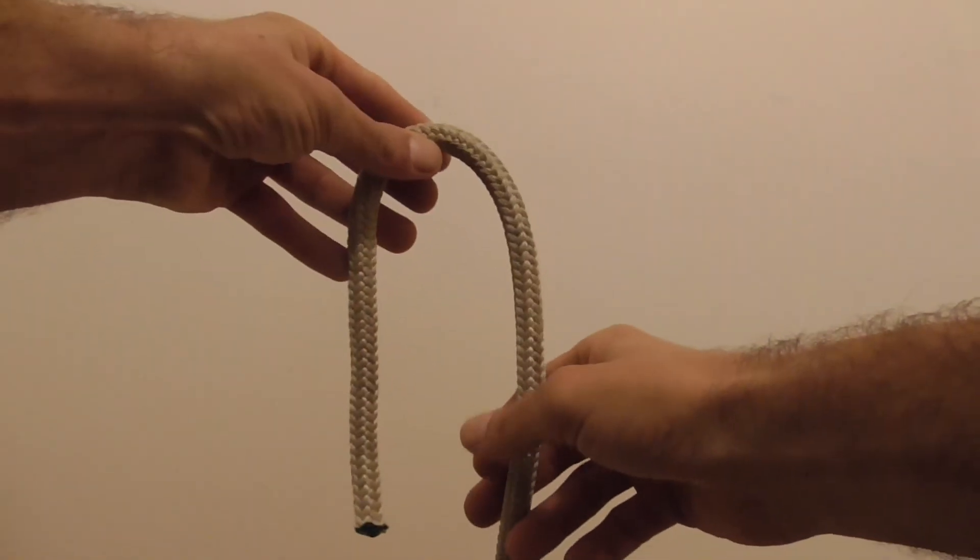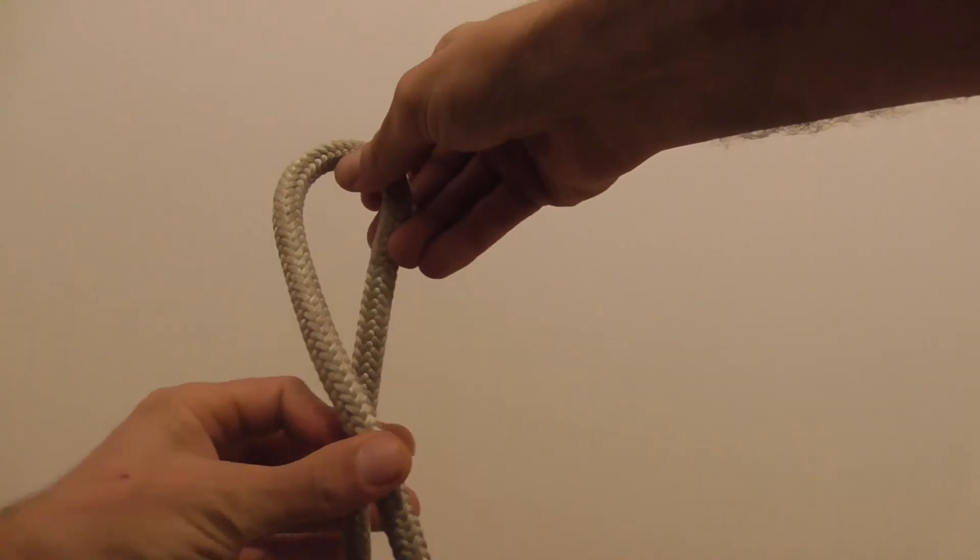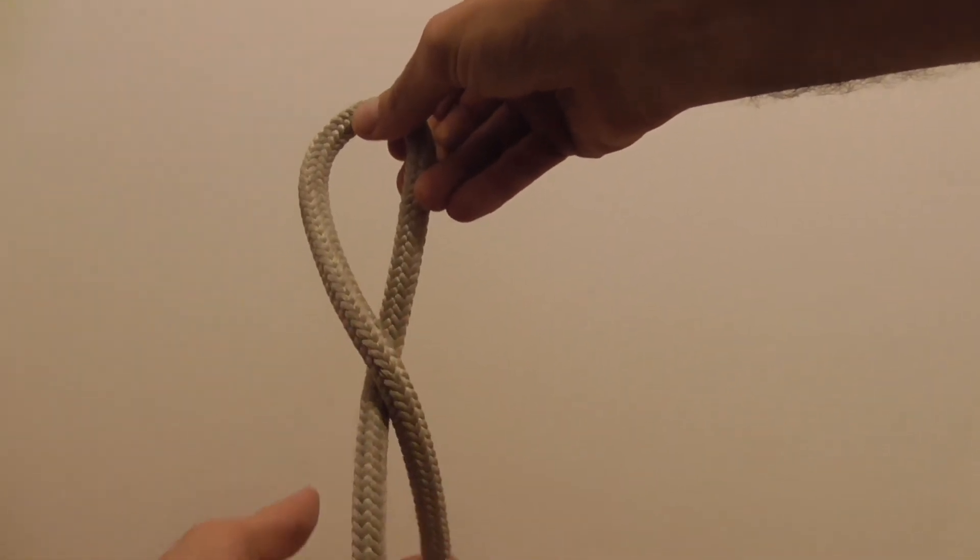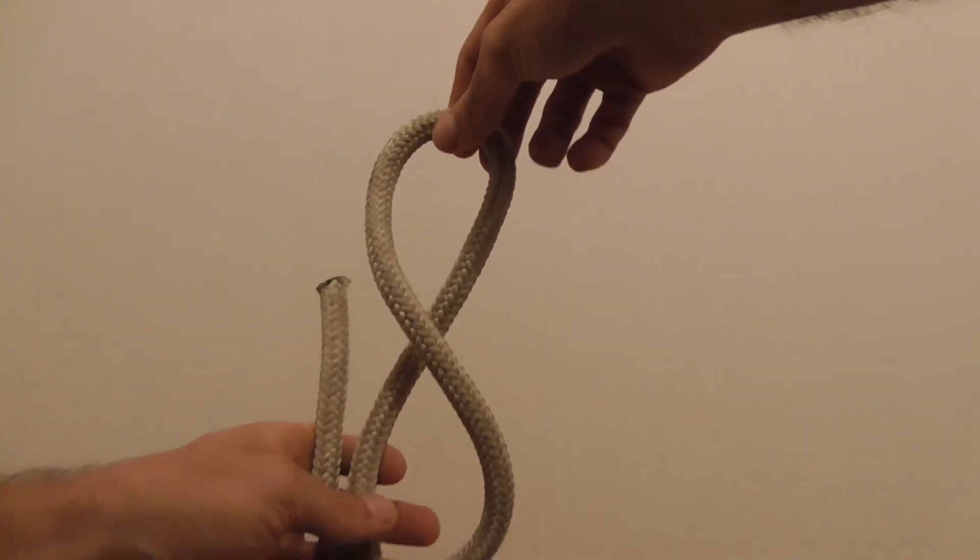To tie this knot all we need to do is take the end of our line, take a bite and then pass the working end over the front of our standing part and then back behind so it forms an 8.